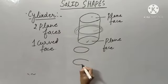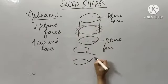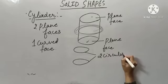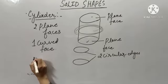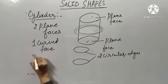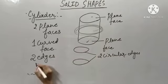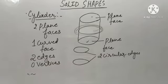These are the two circular edges. Two circular edges. That means, in cylinder, it has two edges and zero vertices. That means, cylinder has no vertex.